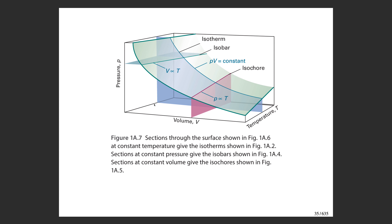Here is another view of the same surface with additional graphics. The heavy green curve and the thin blue curve are called isotherms — everywhere along these curves, the temperature is constant. The red curve is called an isochore: everywhere along it, the volume has a fixed value.